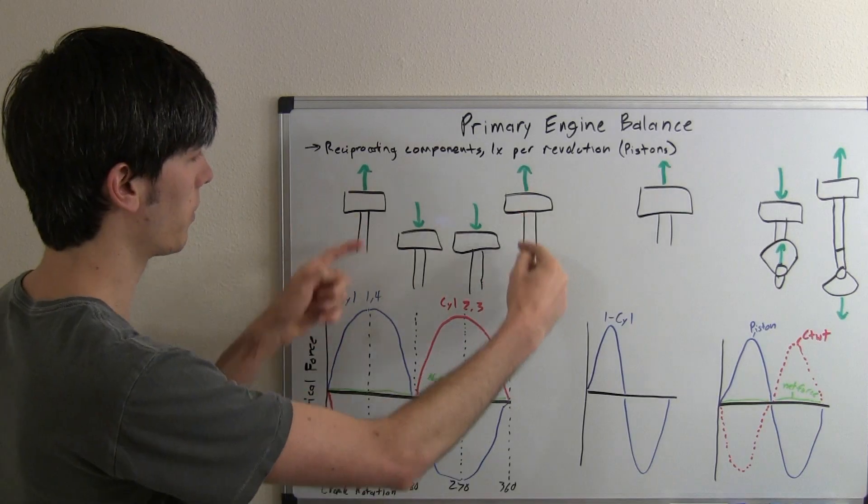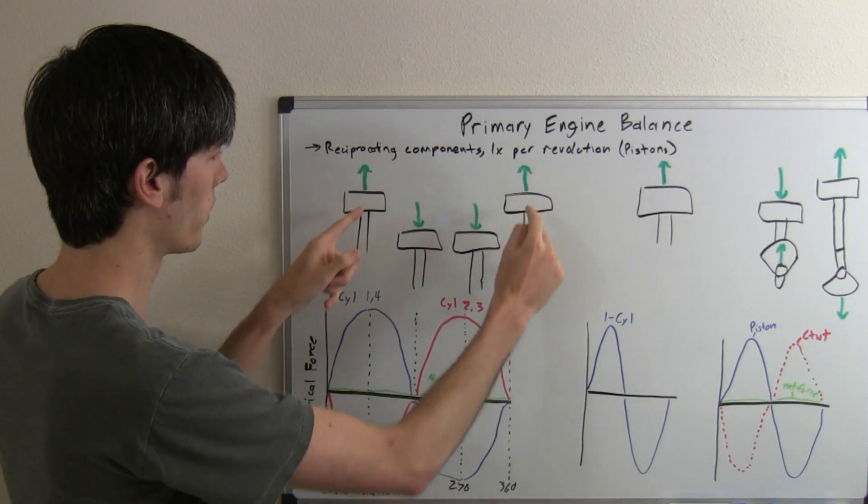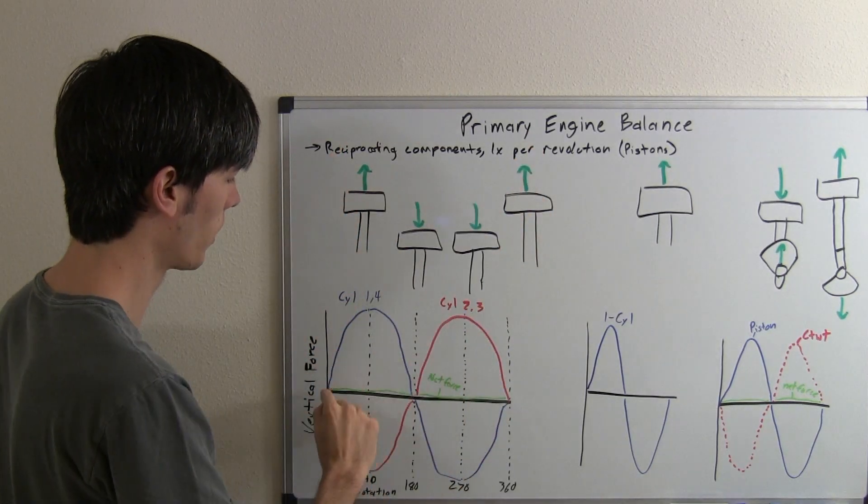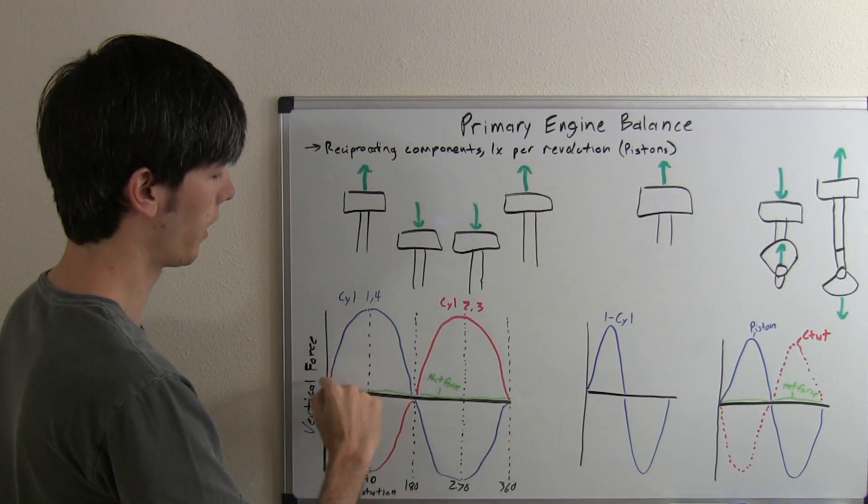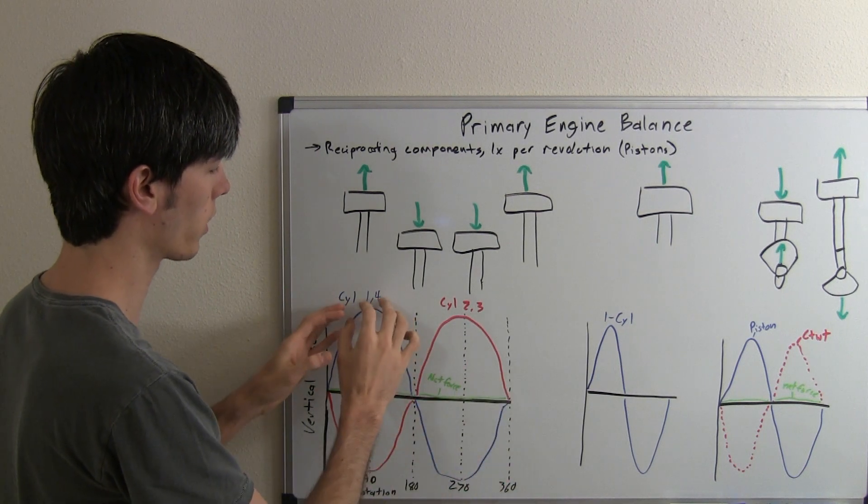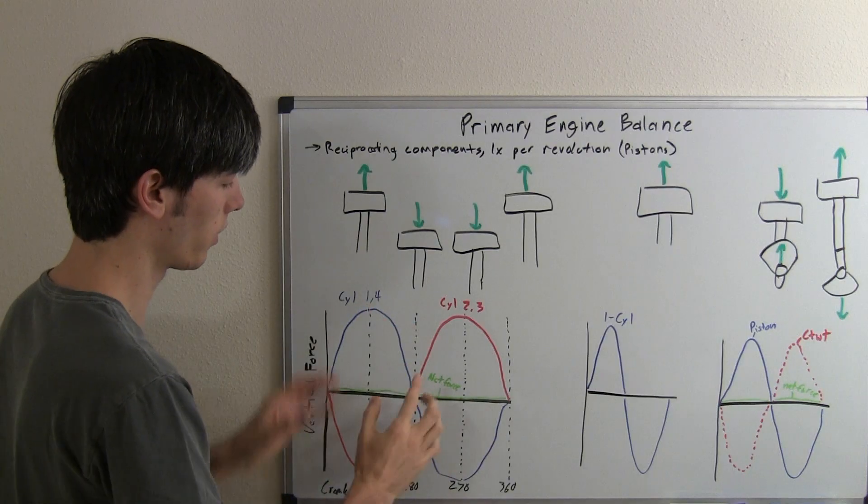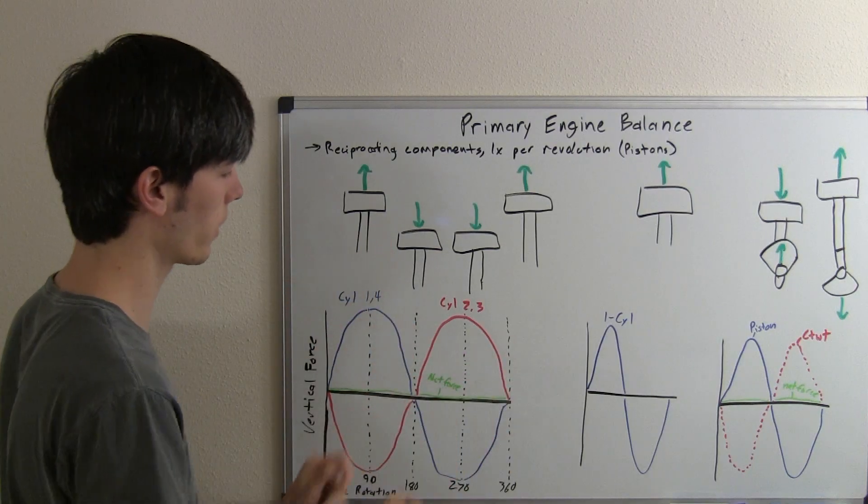As this mass moves up, these two cylinders here move up, these two pistons, then the force is going to go up and then back down and then up and then back down. Those two are going to combine and have this great inertia force going in a certain direction.